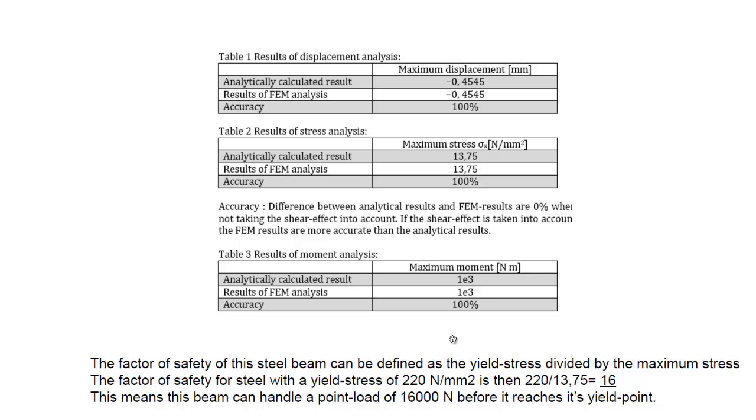And then as a final thing, it's good to state that this beam can easily hold this force. Because the maximum stress is 13.75 Newton per square millimeter. The yield stress is 220 Newton per square millimeter. So then it's good to state that your factor of safety in this case is 16.